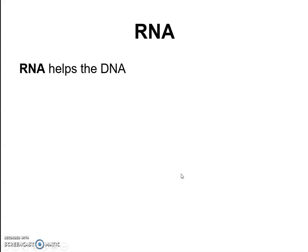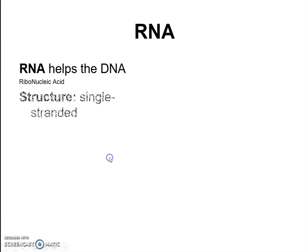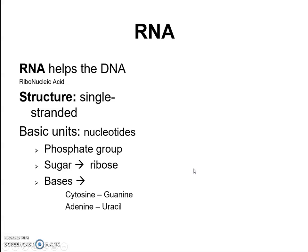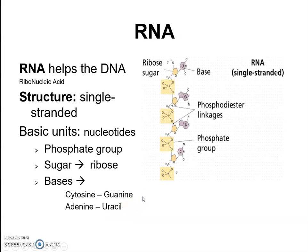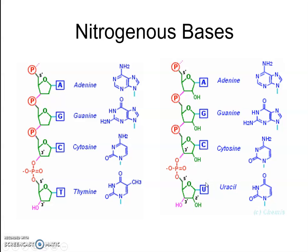RNA is a relative — and likely the evolutionary precursor — to DNA. It is referred to as ribonucleic acid and is a single-stranded structure. It contains a phosphate group, the sugar ribose, and the bases cytosine, guanine, adenine, and uracil — uracil replacing thymine found in DNA. RNA is essentially a copy of portions of DNA that acts as a messenger, delivering the genetic code elsewhere in the cell.